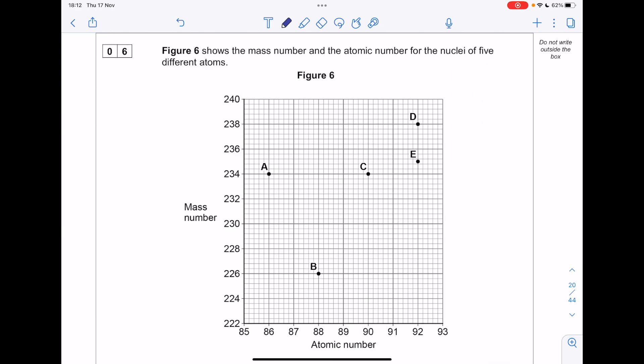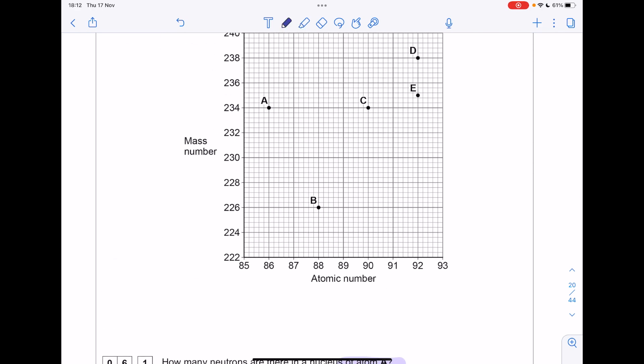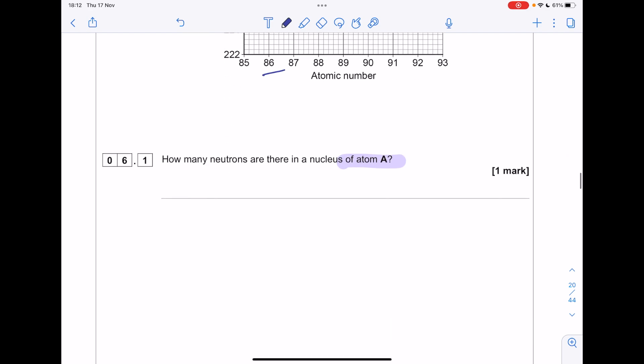Figure 6 shows the mass number and the atomic number for the nuclei of five different atoms. How many neutrons are there in a nucleus of atom A? Atom A has 234 as its mass number and 86 as its atomic number. So I'm setting it up like a usual symbol in the periodic table. Let's work out the difference in those two numbers. The answer is 148.